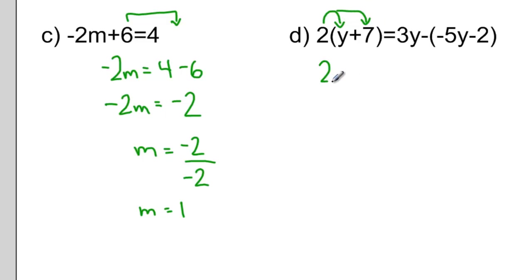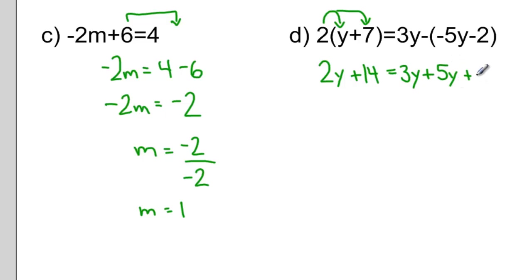Distributing that 2 into the first set of brackets, multiplying all the terms in there by 2. And on the right-hand side, remember when there is a negative in front of the brackets, we change all the signs inside the bracket to the opposite. Now before I start moving terms and constants around, I can do some cleaning up — I can collect like terms on the right-hand side.